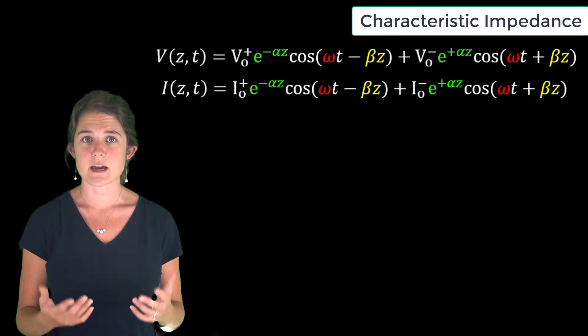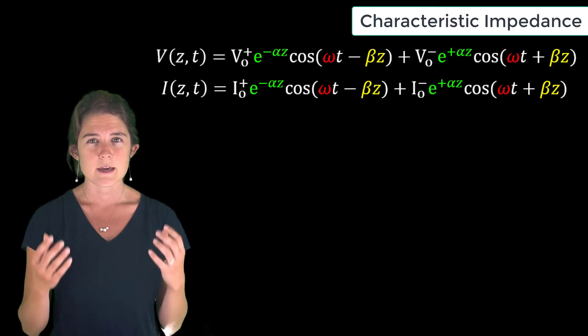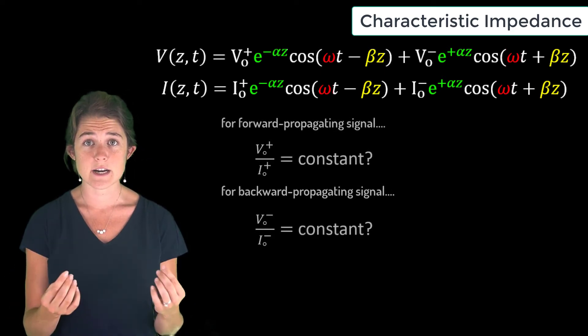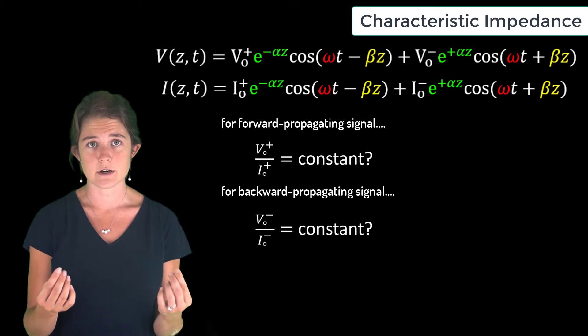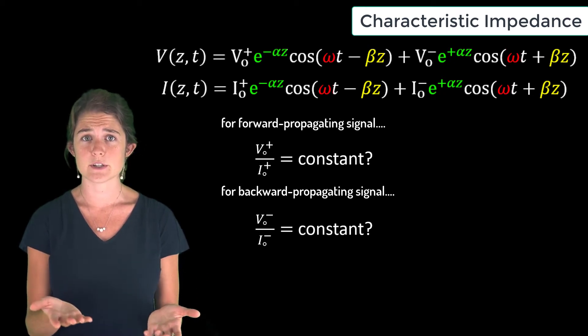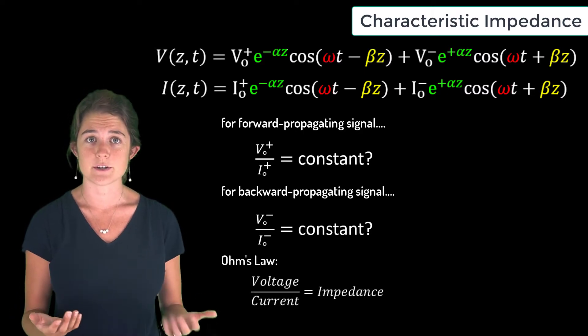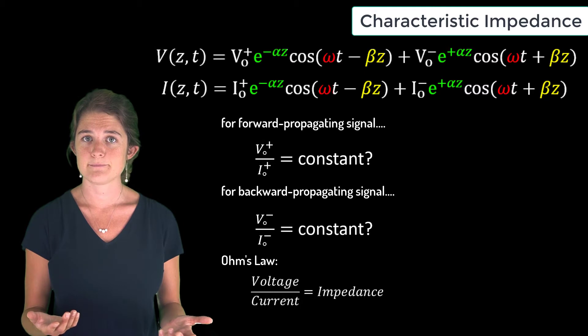Since the phase, frequency, and rate of decay is identical for both voltage and current, it makes sense that there should be a constant ratio of voltage magnitude to current magnitude. Based on what we already know of the behavior of voltage and current, it makes sense that we would call that ratio of voltage to current impedance.